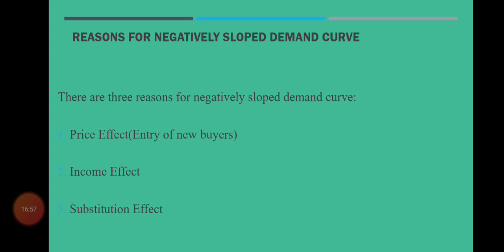جیسے کہ اگر Coca-Cola کی قیمت کم ہو جائے تو Coca-Cola کی اپنی demand تو بڑھے گی — income effect کی وجہ سے بھی اور نئے buyers کی وجہ سے بھی — لیکن کچھ buyers Coca-Cola کو وہاں سے ملیں گے جو کہ Pepsi Cola یا RC Cola کو چھوڑ کر Coca-Cola خریدنا شروع کر دیں گے کیونکہ اس کا بہتر نعم البدل موجود ہے — اس طرح substitution effect کی وجہ سے Coca-Cola کی demand بڑھ جاتی ہے۔